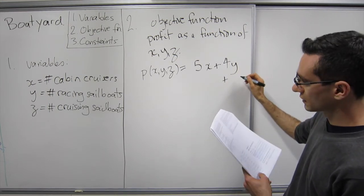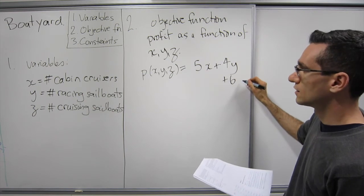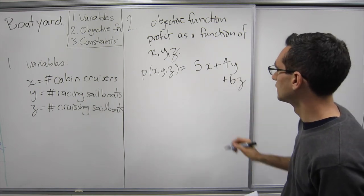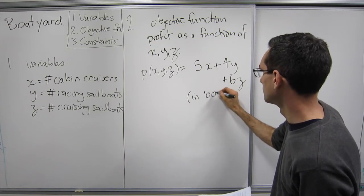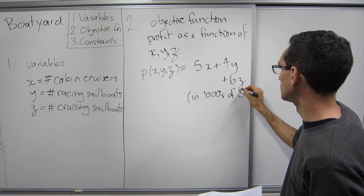And likewise we have $4,000 per racing sailboat manufactured plus $6,000 per cruising sailboat manufactured. So this is in